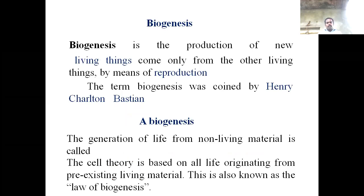Biogenesis is the production of new living things that come from other living things — it means reproduction. Reproduction is a biological process by which new organisms are produced from their parents. The term Biogenesis was coined by Henry Charlton Bastian. Abiogenesis is the generation of life from non-living materials. Cell theory is based on life originating from existing living materials, and this includes the law of Biogenesis.